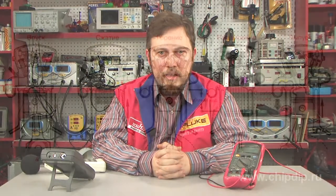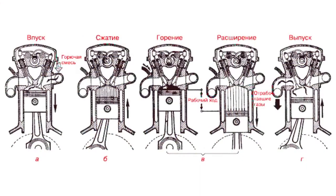The working cycle in a piston internal combustion engine consists of five processes: intake, compression, combustion, expansion, and release.